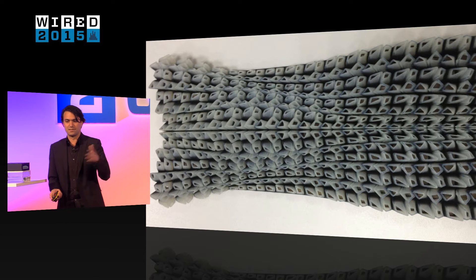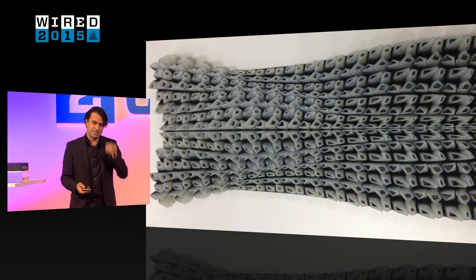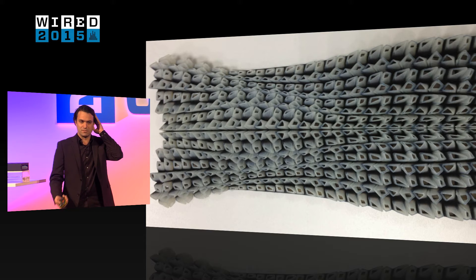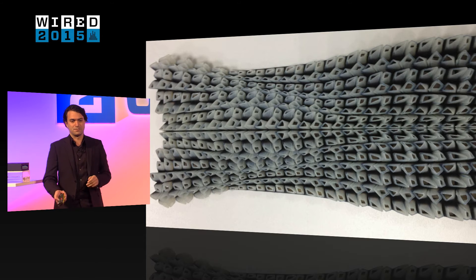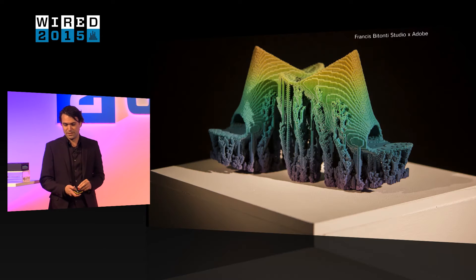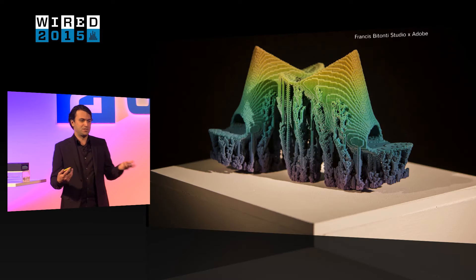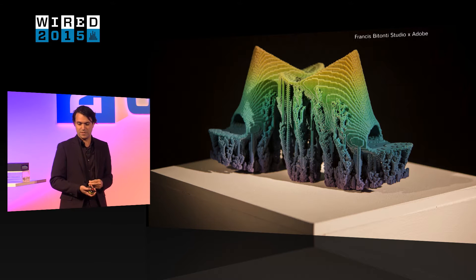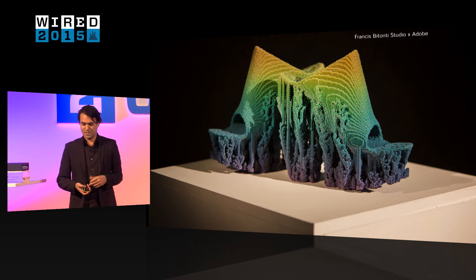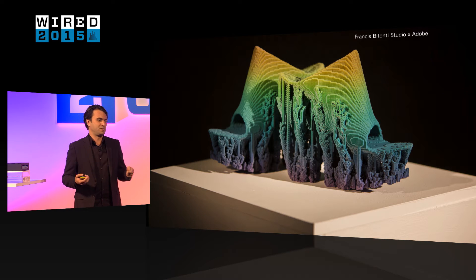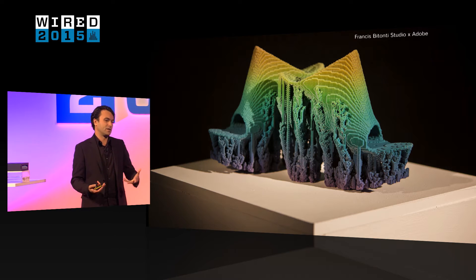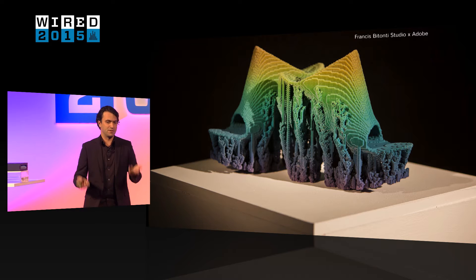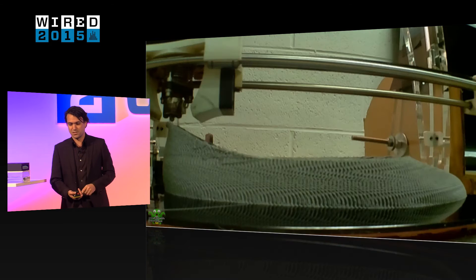We've used that to create articulated skins for use in textiles in the fashion industry. We've also used this to create color gradients. This is a collaboration we did with Adobe using the same technology in three different color polymers in order to create color transitions in shoes.